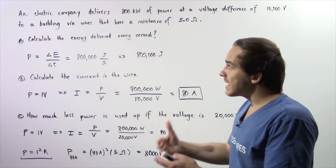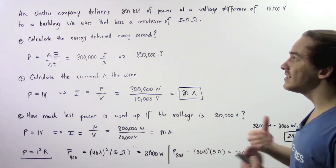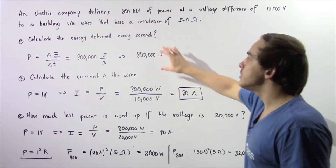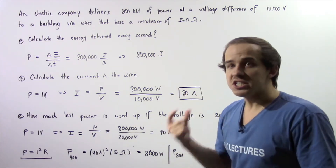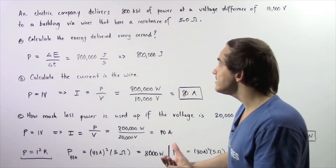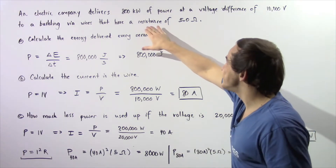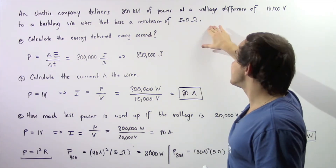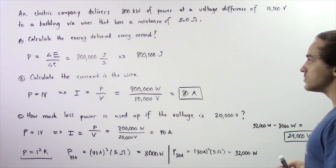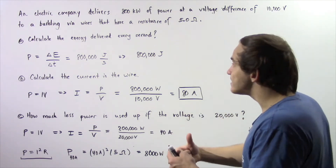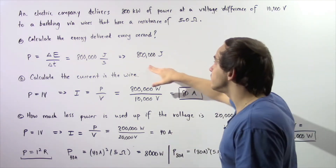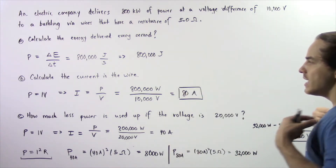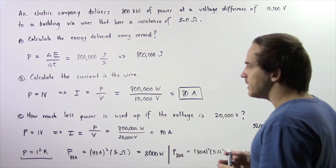Now, if we are asked to calculate how much energy is delivered to our building, it's not actually this quantity, because some of that energy is wasted as a result of the resistance in our wire, which has a resistance of 5 ohms. So a little bit less of this energy will be delivered to our building. Let's move on to part B.